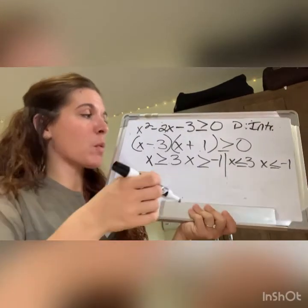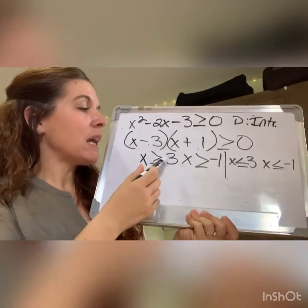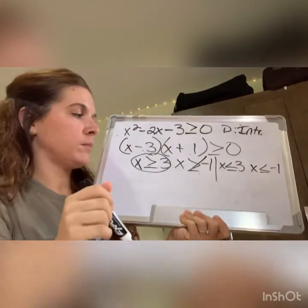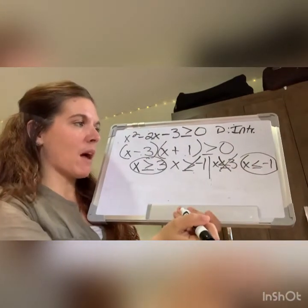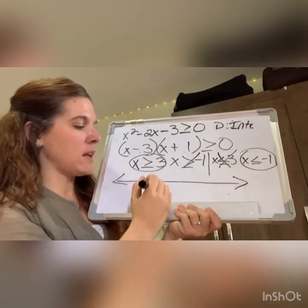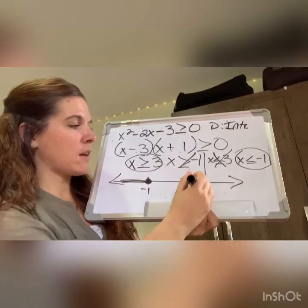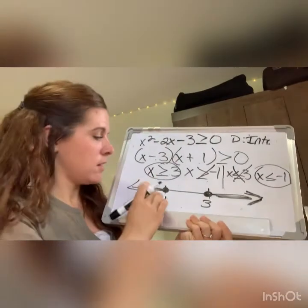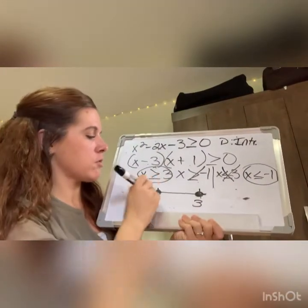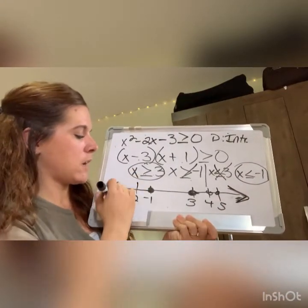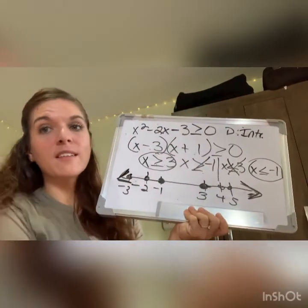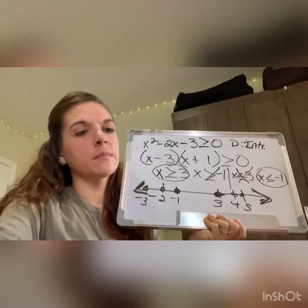Now we need to decide which to keep. For the positives, anything greater than 3 is also greater than -1, so keep x ≥ 3. For the negatives — x ≤ 3 and x ≤ -1 — anything less than -1 is also less than 3, so keep x ≤ -1. Since the domain is integers, graph only integer values: 3, 4, 5 to infinity, and -1, -2, -3 to negative infinity, using closed circles at -1 and 3.